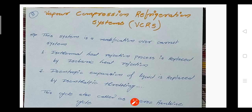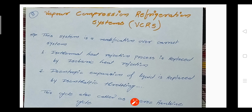The first modification is that the isothermal heat rejection process is replaced by the isobaric heat rejection process. In the Carnot cycle, the condenser releases heat at an isothermal process. Now that isothermal process is replaced by the isobaric, that is the constant pressure process, where the temperature is changing during rejection of heat.